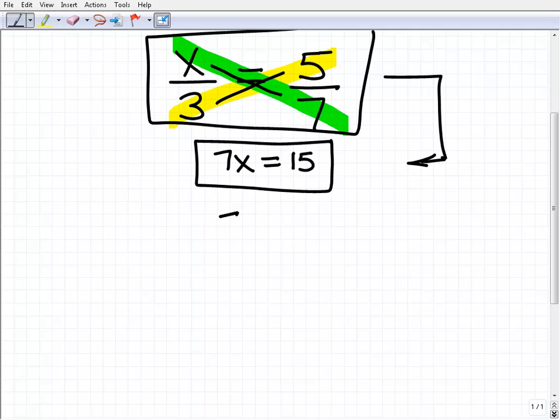And of course to solve that, 7x equals 15, all I need to do to get x by itself is divide both sides of the equation by 7. And I get x equals 15 over 7. And I am done.